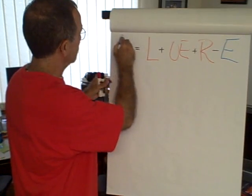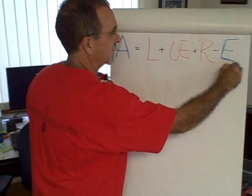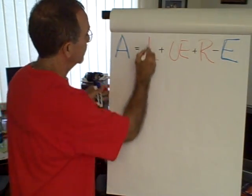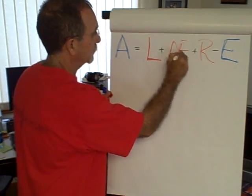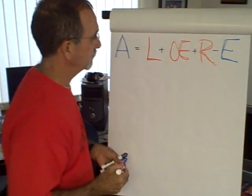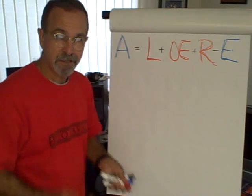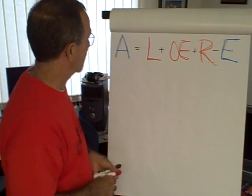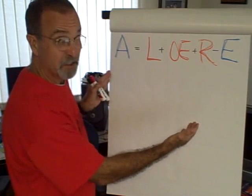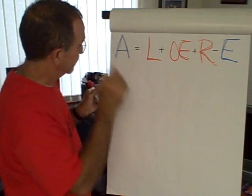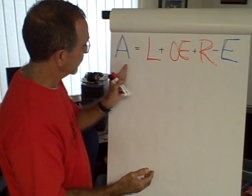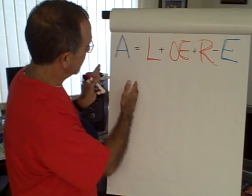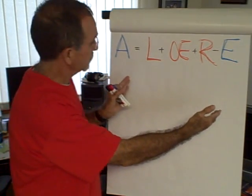I want to talk a little bit about the accounting equation, and this might be a little difficult to see with the kind of lighting we have here in my family room, but let's hope it works. The accounting equation is fundamental information that's essential for a good understanding of the basics of financial accounting. The left side of the equation must always be equal to the right side of the equation.